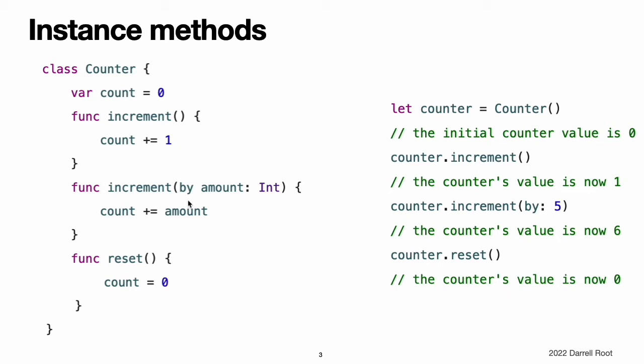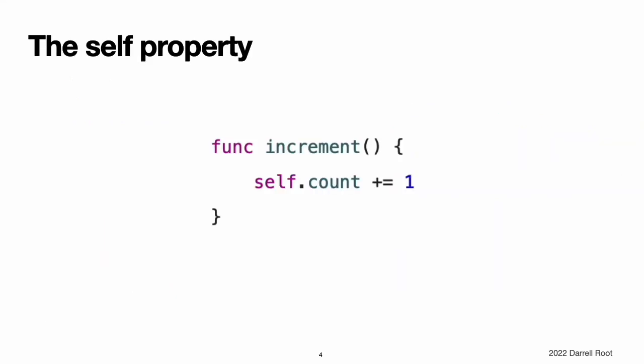Function parameters can have both a name for use within the function's body and an argument label for use when calling the function, as described in function argument labels and parameter names. The same is true for method parameters because methods are just functions that are associated with the type. The self property.